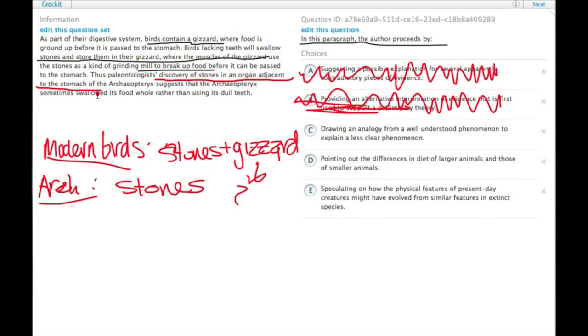You don't actually have to know that Archaeopteryx is an ancient bird—it could be a lizard for all you care. All that matters is that they're drawing an analogy to this ancient thing that we don't know as much about and using modern, well-understood stuff by analogy. So choice C.